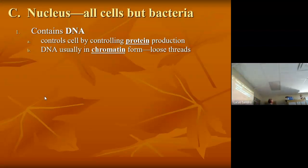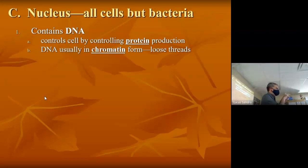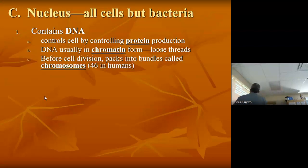That ball of yarn is great if you want to make proteins. It's not so great when you want to pass your DNA on to your offspring or to a new cell if you're growing. So what you do when you're about to divide a cell is you pack it up into these little X-shaped bundles — chromosomes — of which you have 46. You'll learn later it's really more like 23 pairs.